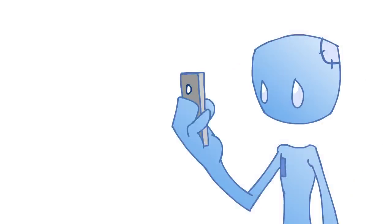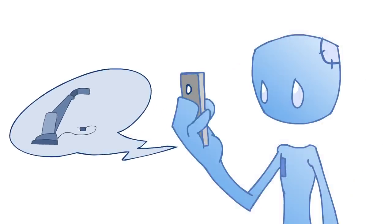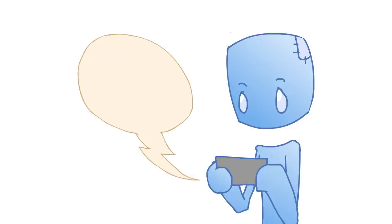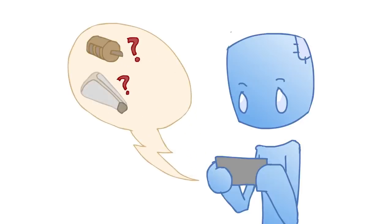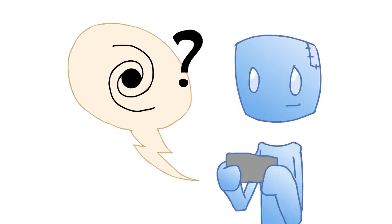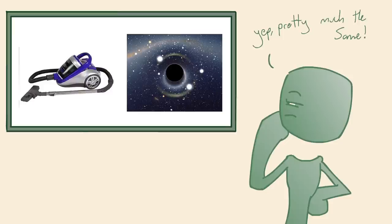A kindred spirit messaged me recently and asked me why I thought the vacuum cleaner model of a black hole wasn't fitting. I responded very simply: where's the motor, where's the cleaner bag, the filter, the power source? How does it work? I get the analogy - it's a vacuum cleaner because it sucks things up.